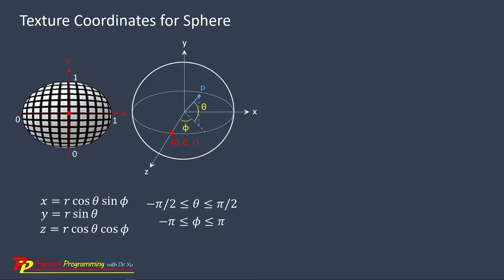Theta can change from minus half pi to positive half pi. Phi can change from minus pi to positive pi. Now we want to map texture coordinates U and V to theta and phi using these relations.